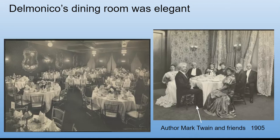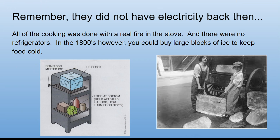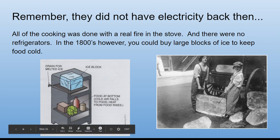Delmonico's was the fanciest restaurant in the city — the richest people ate there, including Mark Twain, the famous author. Keep in mind there was no electricity back then; all cooking was done with a real fire inside the stove. There were also no refrigerators — instead, people used ice boxes, cabinets with large blocks of ice inside to keep food cool, though not as cold as a modern refrigerator.